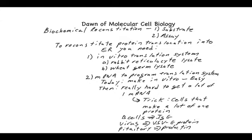The trick is that cells that make a lot of one protein can be exploited to isolate RNA from those cells and to program a translation system. I just want to reemphasize this yet again, because we'll be coming back to it over and over again, the study of cell biology often exploits the diversity and the specialization of different cell types and tissues to find the optimal system that you can then take apart a particular piece of cellular function.